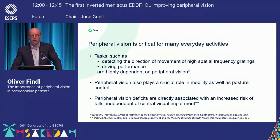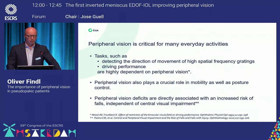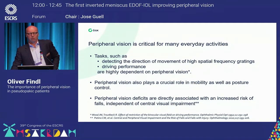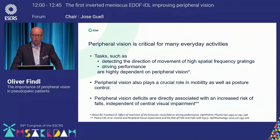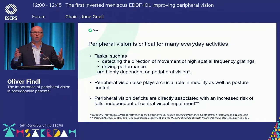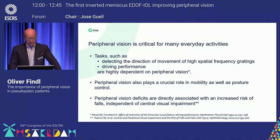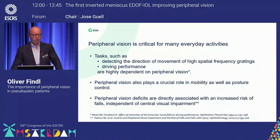So why is peripheral vision actually critical? We know that tasks like detecting spatial frequency gratings in the periphery, or driving performance, are highly dependent on peripheral vision. It also plays a crucial role in mobility as well as posture control — how quickly and safely we can walk. It's quite clear that if you have peripheral vision deficits you will have an increased risk of falls, and I'll show you a slide on just that.